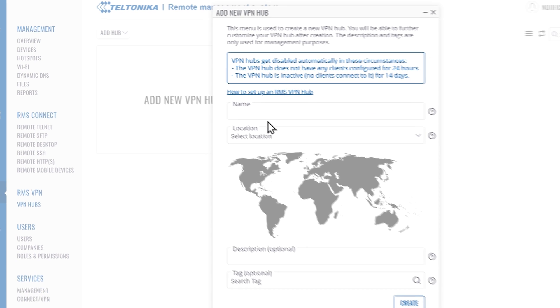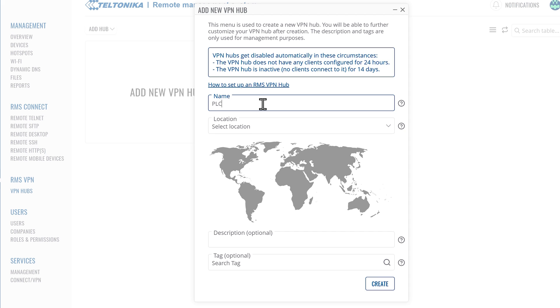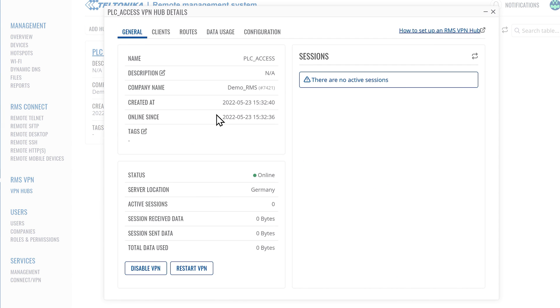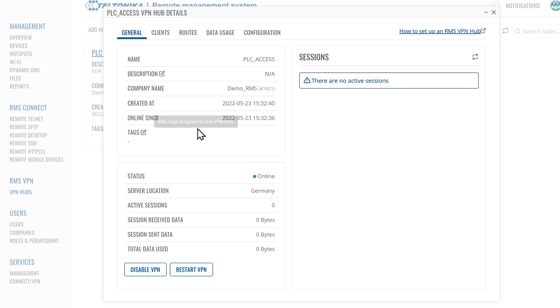Click Add New VPN Hub. Enter the name of the hub, optionally set the description and tags. Then, open the newly created hub. In the general window, you will find the main info about the hub.